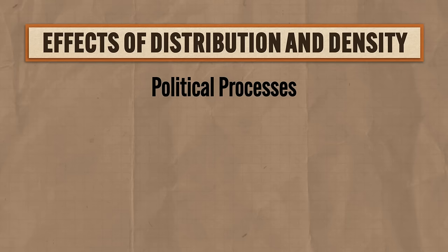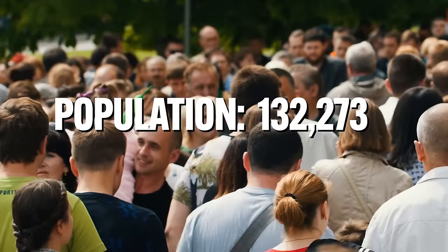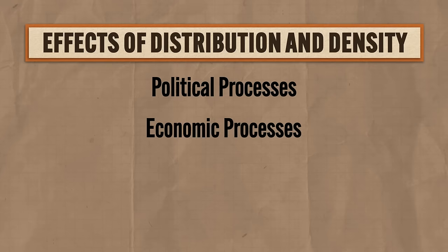If an area is growing rapidly in population, businesses have more incentive to open stores and offices there, while the opposite is true in places with decreasing population. Governments also allocate money for infrastructure like roads and bridges based on whether populations are growing or declining. Third, density and distribution affect social processes — these calculations determine how accessible public services like schools or hospitals are. It's far more cost effective to build a hospital in a densely populated area than a sparsely populated one.